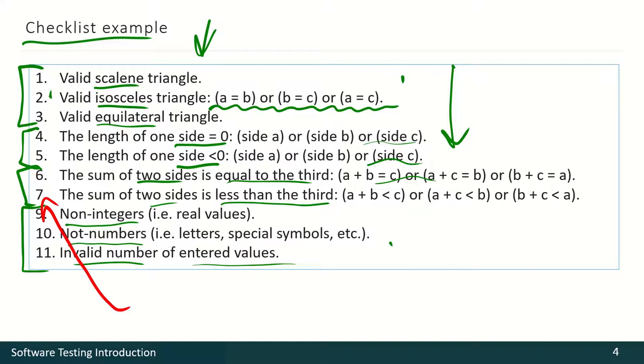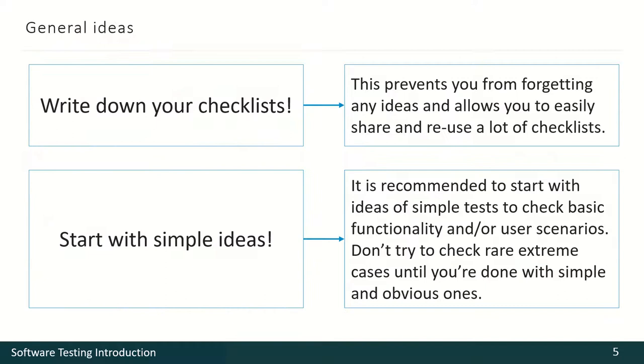Speaking about ideas on how to write good checklists, we shall start with two rather simple ones. The first is to write down your checklists in order not to forget anything, to share your ideas with colleagues, and to easily reuse the data. It's really impossible to keep all those points in your mind, especially when you have a lot of big checklists.